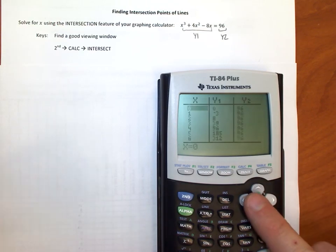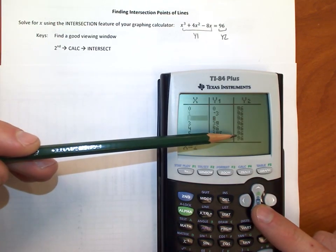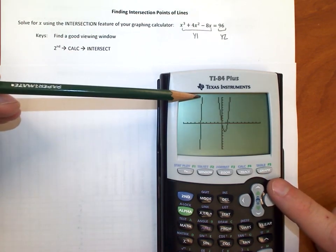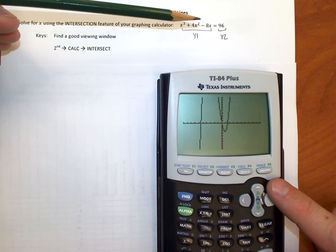Especially if I go to the table, you'll see it, look what the y coordinates are. Oh yeah, the second line's all the way up at 96. And whenever we graph this, this only goes up to 10. So the second line is like way up here, right?